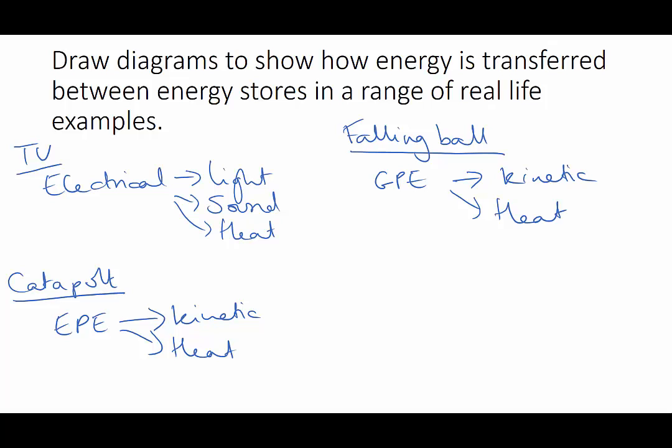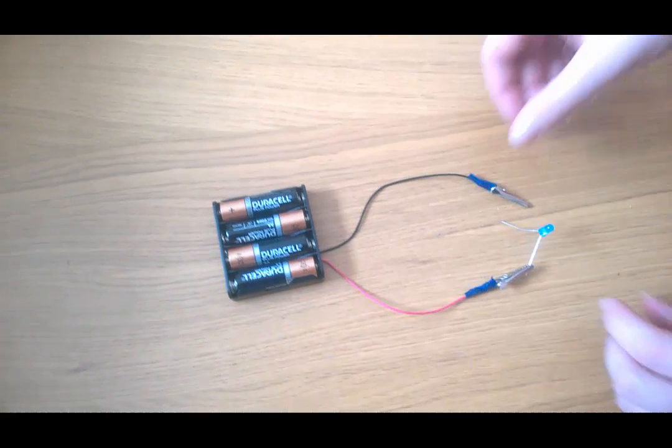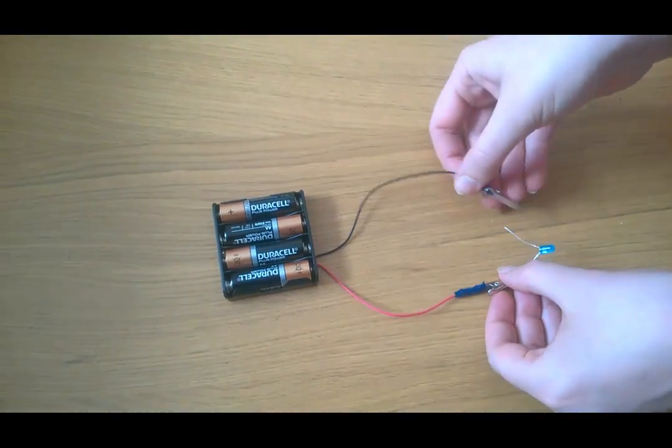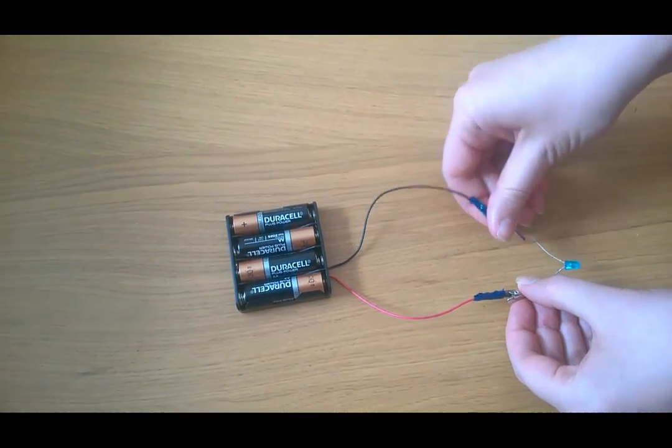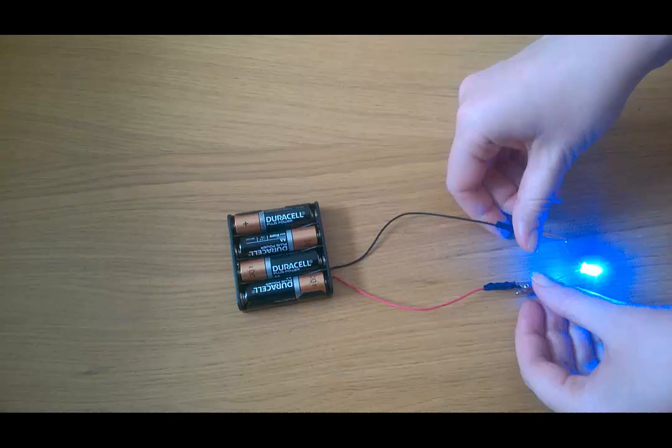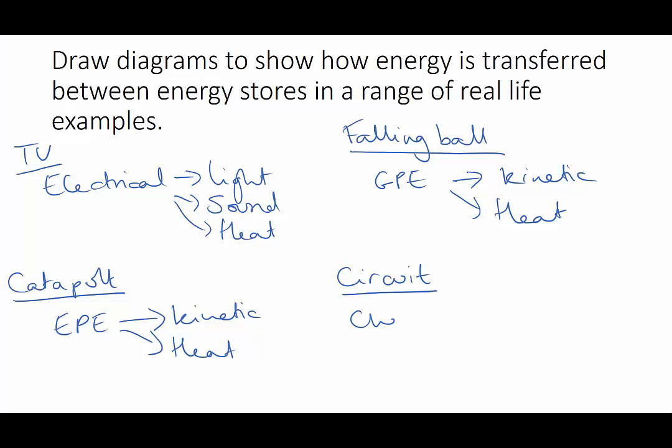Our final example is a circuit. We've got a simple circuit here with a battery and an LED. As I connect up the batteries which have chemical energy to the LED, electrical energy flows round and that's converted by the LED into light. Again, heat energy is produced and if I put too high energy through the LED we can actually feel that heat energy.